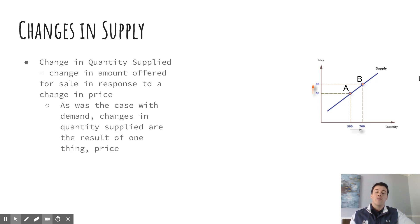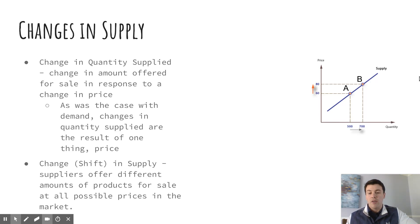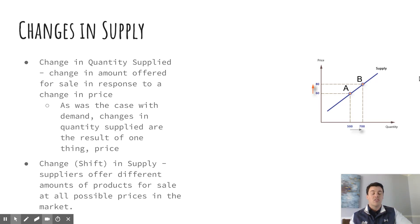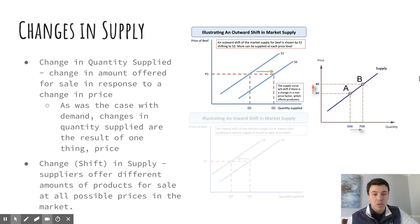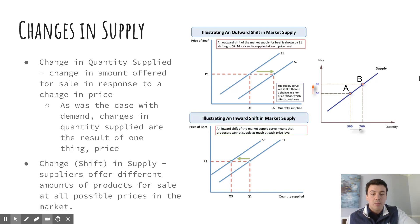That is a change in quantity supplied — just price. If we have another factor, which I'll share those determinants with you in just a moment, if something else causes a change in quantity for supply, that would be shown graphically as a shift. Suppliers are going to offer different amounts of products for sale even though the price is still the same — some other factor is causing that to occur. Here is an increase in supply: some factor other than price, because notice the price stays at P1, causes the quantity to increase from Q1 to Q2 — that is a shift to the right. If we see a decrease in supply, shown on the bottom graph, that is a shift to the left: price stays at P1, but quantity decreases from Q1 to Q3. Something other than price is causing these shifts to occur, either as an increase or decrease.